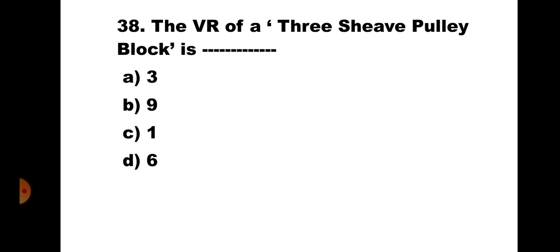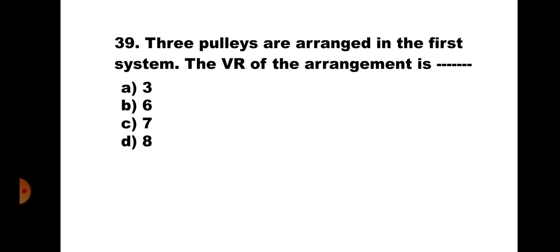Question number 38: The VR of a 3-shoe pulley block is: A) 3, B) 9, C) 1, D) 6. In a 3-shoe pulley block, there are 3 pulleys in the fixed block and 3 in the movable block — total 6 pulleys. As this is the second system of pulleys, VR = 6. The correct answer is D) 6.